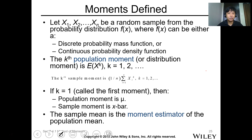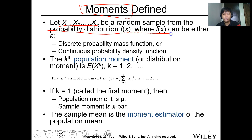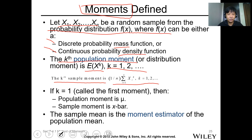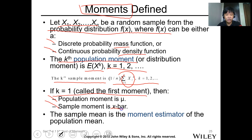Now, moments defined. For moments of an estimate, suppose we have a random sample x1 to xn from a probability distribution f(x), where f(x) can be either a discrete or continuous probability function. The k-th population moment is E(X^k), and the k-th sample moment is (1/n) times the summation of x_i^k from i equals 1 to n. If k equals 1, the population moment is the mean and the sample moment is x-bar. The sample mean is the moment estimator of the population mean.